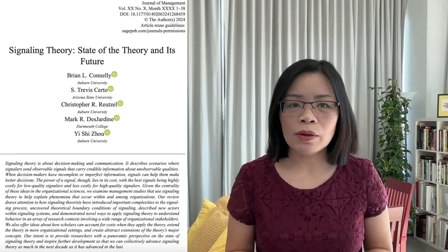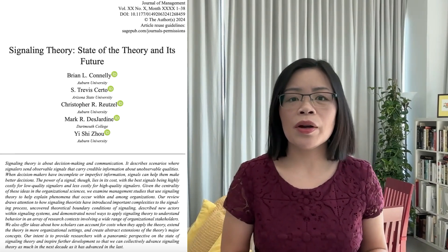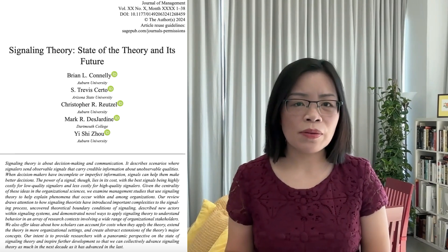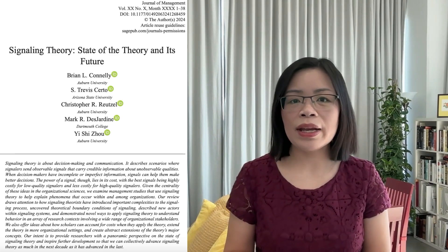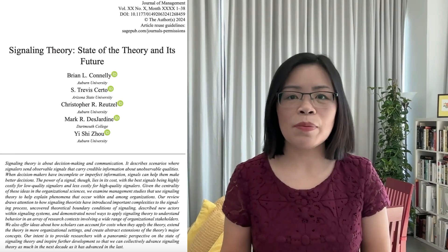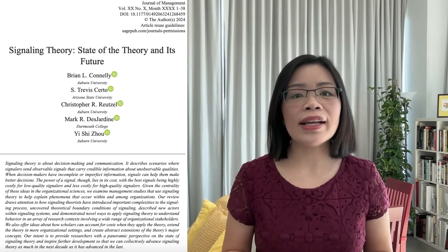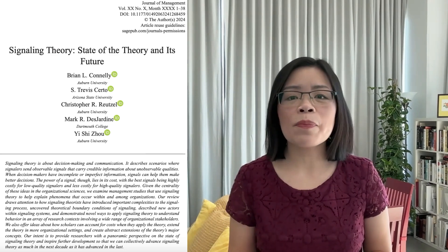Signaling theory describes scenarios where one party, the signaller, sends observable signals that carry credible information about unobservable qualities to another party, the receiver. This theory is particularly relevant in organizational settings where decision makers often have incomplete or imperfect information.